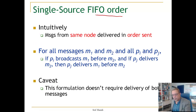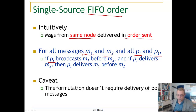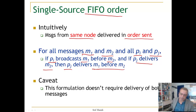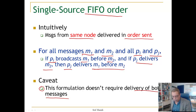When it comes to FIFO order, messages from the same node are delivered in the order sent. More exactly, for all messages M1 and M2 and for all processes Pi and Pj, if Pi broadcasts M1 before M2, and if Pj delivers M2, then Pj should deliver M1 before M2. The order of delivery is according to the broadcast order from the source. Note that this formulation does not require delivery of both messages.